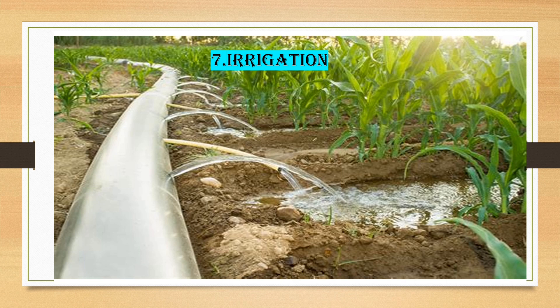Irrigation is also one of the major problems in present day agriculture. Farmers who have bore wells or tube wells can manage their agriculture properly, but those who depend on rains face serious problems. During critical crop growth stages — such as flowering and the time of harvesting — they face irrigation shortages, which greatly increase the chances of crop failure.